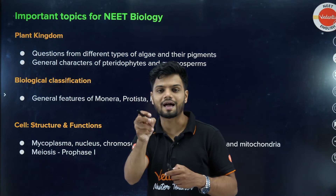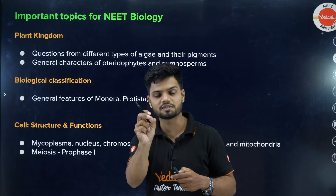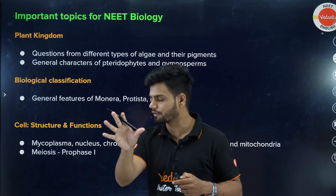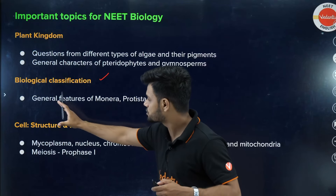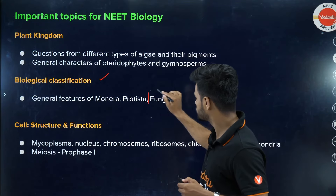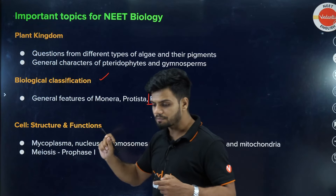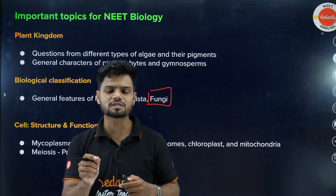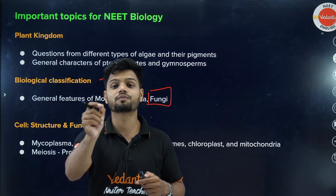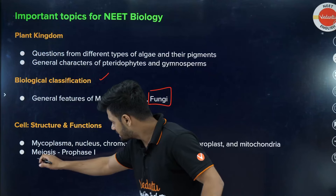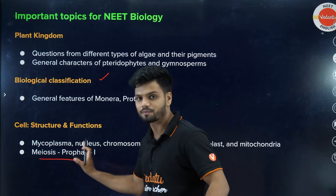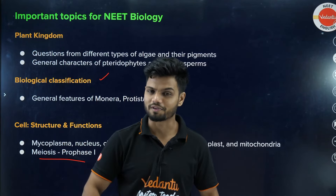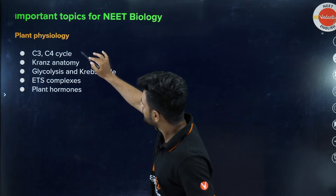From Plant Kingdom, focus most on Algae — questions repeat every single year from there. Cover pigments, gymnosperms, and angiosperms for extra revision. In Biological Classification, focus on genera of Monera, Protista, and Fungi — Fungi especially. In the Cell unit, the main structures to focus on are chloroplast, mitochondria, and nucleus. In Cell Division, focus on Meiosis, especially Prophase I.